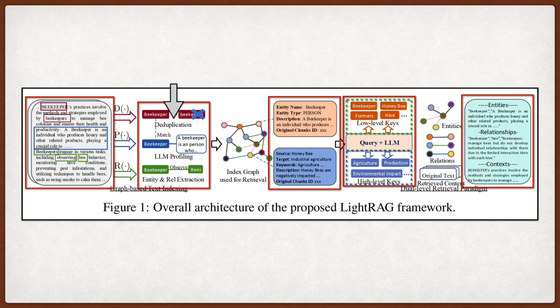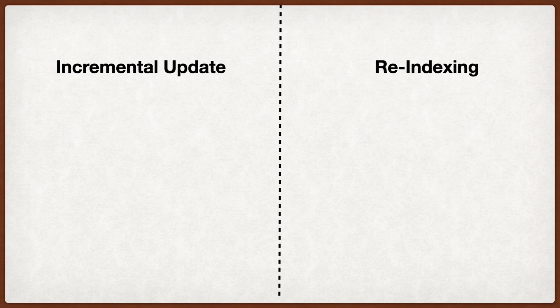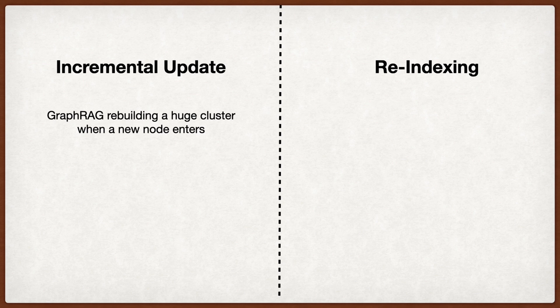A big advantage here is how they handle data updates with an incremental update algorithm. In many existing GraphRAG systems, adding new data requires rebuilding large parts of the index or community reports, which is very slow and expensive.